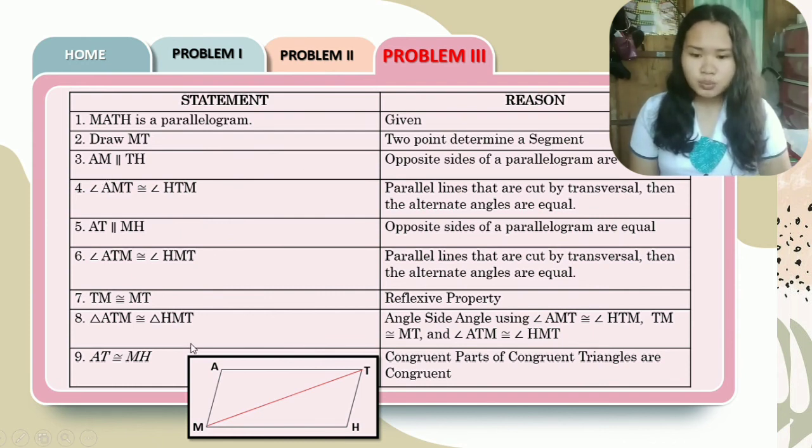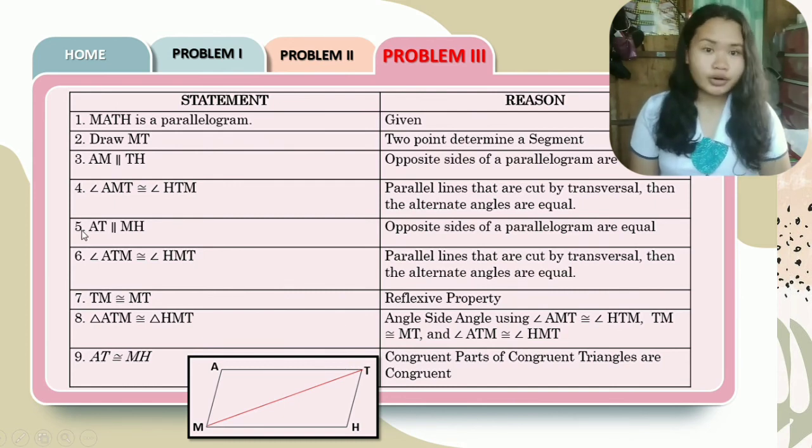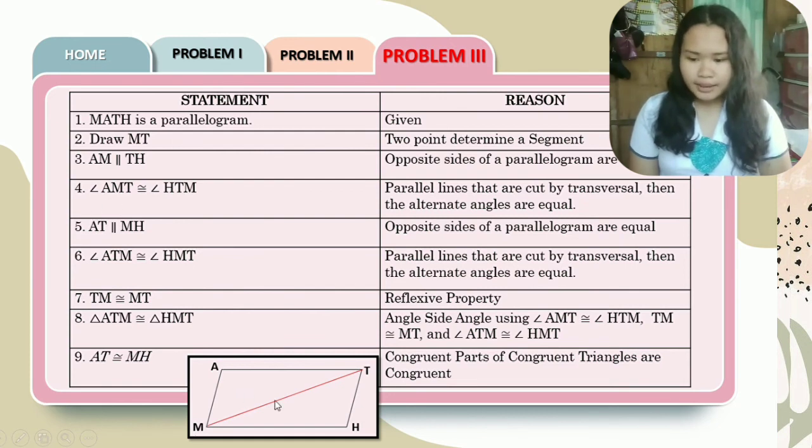Draw MT, two points determine a segment. AM is parallel to TH. Opposite sides of a parallelogram are equal. We learned that in your elementary or previous math lessons. Angle AMT is congruent to angle HTM. Parallel lines that are cut by a transversal, then the alternate angles are equal. And AT is parallel to MH, opposite sides of the parallelogram are equal.